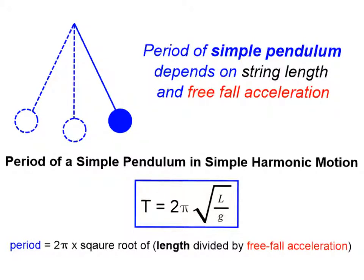The period of a simple pendulum depends on two things: string length and free fall acceleration. If we shorten this string length, the time it takes to execute a complete cycle of motion will be shorter. Also the period of a pendulum depends on free fall acceleration. So if we were to put this pendulum on the moon, the time it takes to complete one cycle is going to be longer. Therefore we have this equation for the period of a simple pendulum in simple harmonic motion: T equals two times pi times the square root of the string length divided by free fall acceleration.